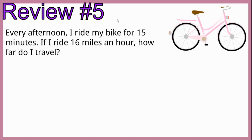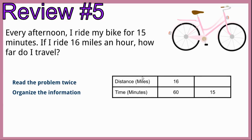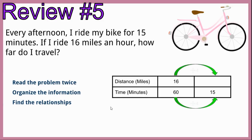Review problem number five. Every afternoon I ride my bike for 15 minutes. If I ride 16 miles an hour, how far do I travel? We organize our information in a table: distance over time, miles to minutes. If I go 16 miles in an hour, remember that 60 minutes equals one hour, so 16 miles per 60 minutes. I'm only riding for 15 minutes, so we divide both by 4 because 60 divided by 4 is 15. 16 divided by 4 is 4, so I travel 4 miles.